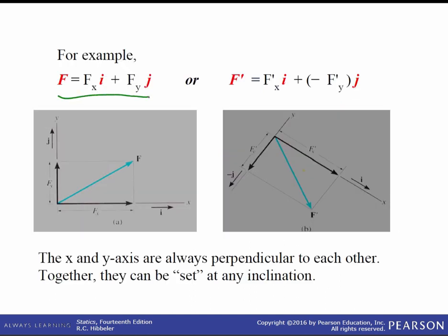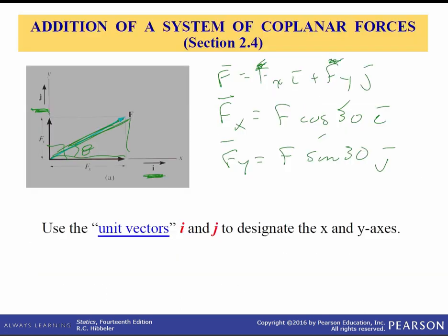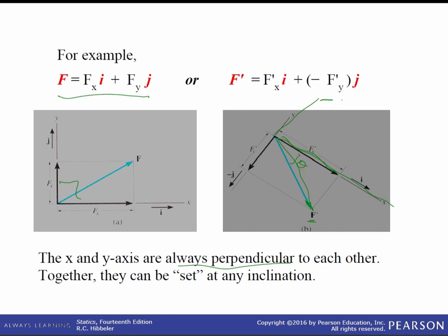The x and y axes are always perpendicular to each other, but we can put them in any inclination we want. For instance, here the x-axis goes this way and the y-axis this way, and we have a force f in the fourth quadrant. If we know angle theta, then the f prime force is just f prime sub x — the component in the i direction — which is f times cosine of 30. The component in the y direction is negative because it's in the negative y direction, so f sub y is negative.